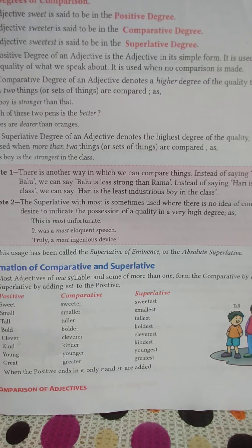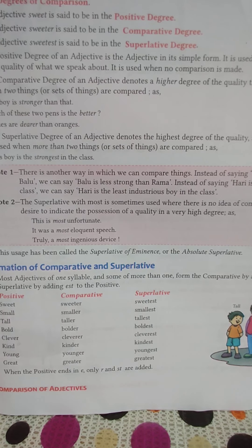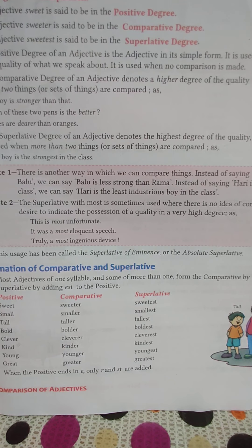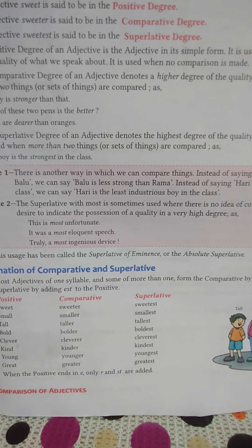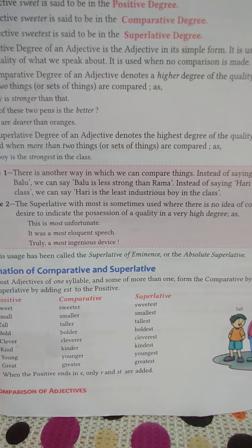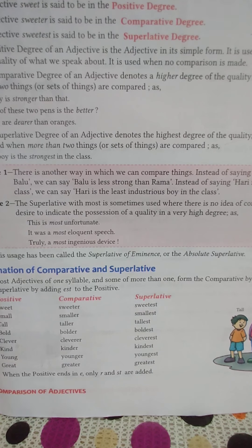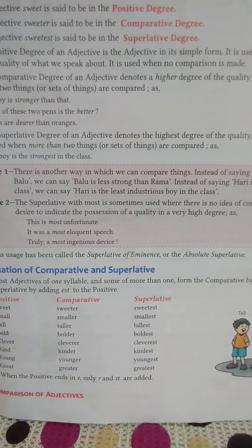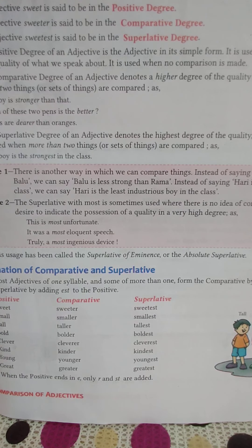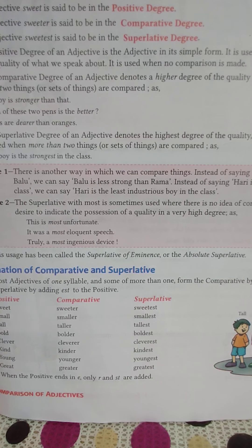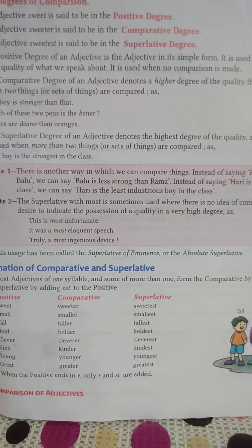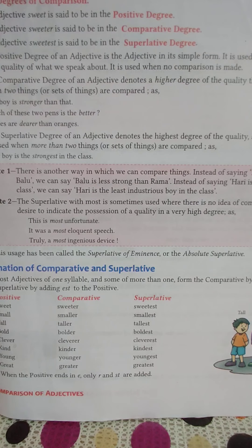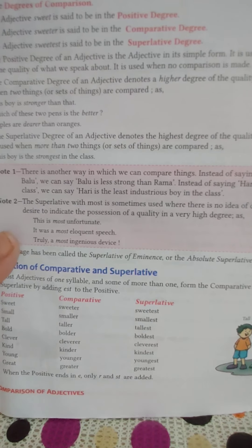Note 2: The superlative degree with 'most' is sometimes used where there is no idea of comparison, but merely a desire to indicate the quality in a very high degree. For example: 'This is most fortunate,' 'It is a most eloquent speech,' 'Truly a most ingenious device.' This usage is called the superlative of eminence, or the absolute superlative, meaning nothing is above it.